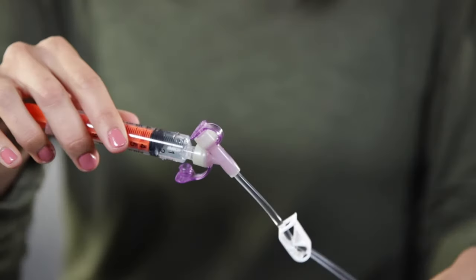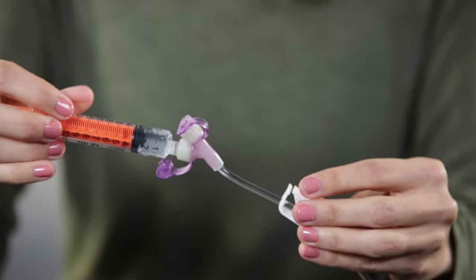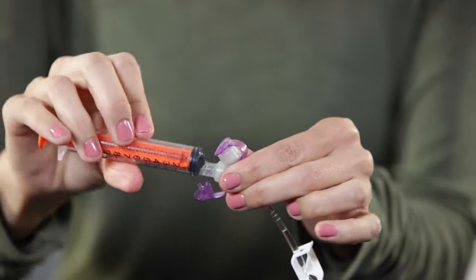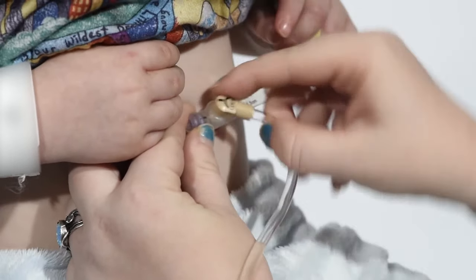If the extension tube is not already attached to the G-tube, prime it with water or formula and then clamp it. Attach the primed extension tube to the G-tube.